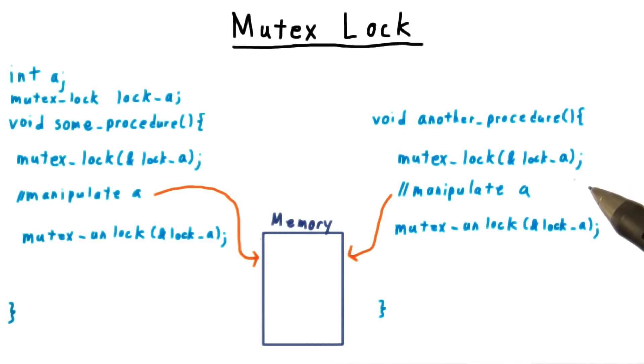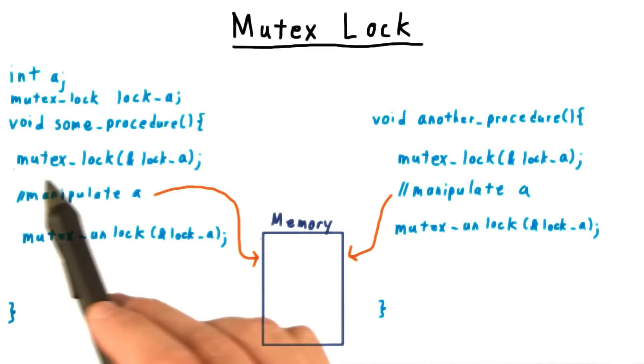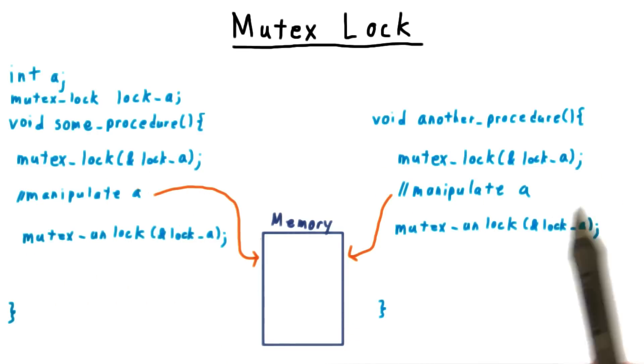And of course, if the scheduler had worked things out so that this call had been called first, then he would get the lock. And this call to acquire the mutex lock would block until this data manipulation was finished, and the mutex variable had been unlocked.